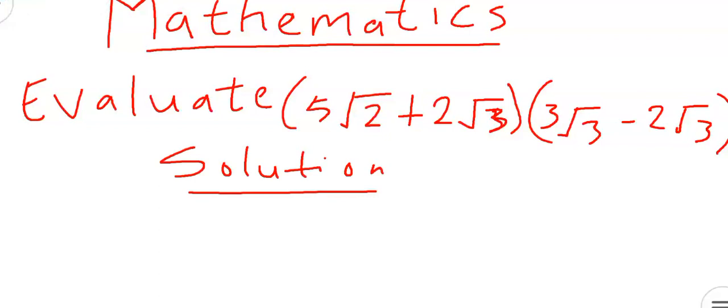From here, 5√2 multiplied by 3√3. 5 times 3, that will be 15, then √2 times √3, so that will be √6. And also for the next one, we will be taking 5√2 and multiply it with -2√3. So 5 times -2, that will give us -10, then √2 multiplied by √3, that will give us √6.